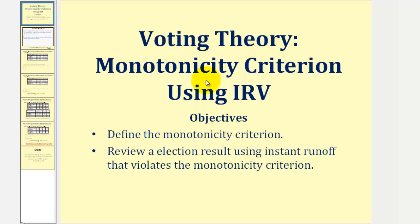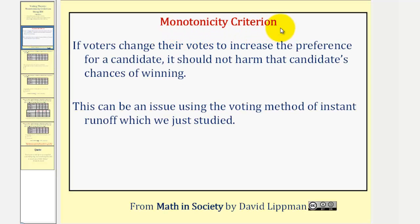Welcome to a lesson on the monotonicity criterion using instant runoff voting. In this lesson, we'll define the monotonicity criterion and also review an election result using instant runoff that violates it. The monotonicity criterion is a fairness criterion that states if voters change their votes to increase the preference for a candidate, it should not harm that candidate's chance of winning. This can be an issue when using the voting method of instant runoff.